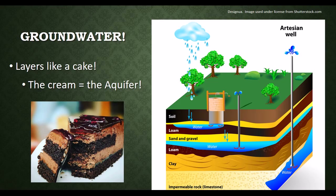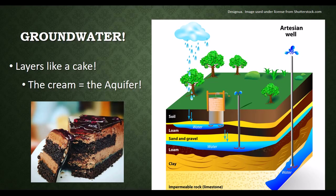Buried beneath the topsoil, there are layers of sand, gravel, and bedrock, sort of like the layers in a cake. Water from rain flows down into those layers and squeezes in between the spaces of sand and gravel or into the crevices of the bedrock, where it either stays put or continues flowing like an invisible river. We call these underground water-filled areas aquifers, and this is where groundwater comes from. If the ground layers are like a cake, then you can think of the aquifer as the layer filled with cream or jelly.